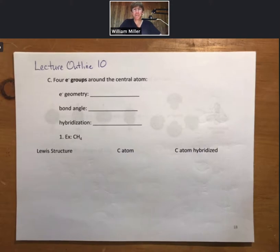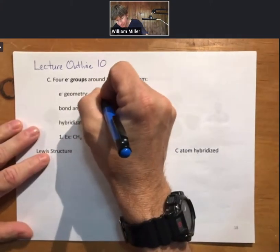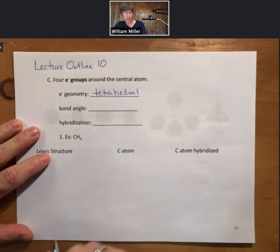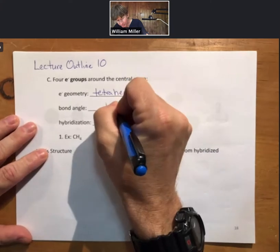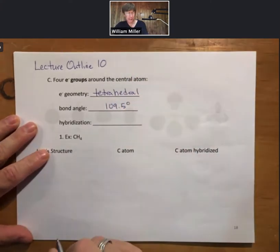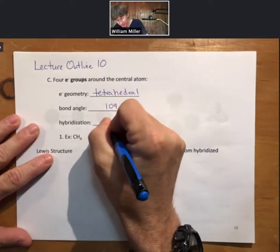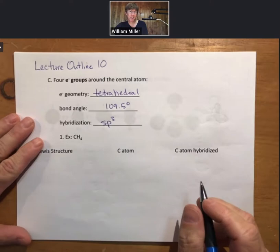Starting with page 18 this time, we just did two and three electron groups. Now we're going to do four electron groups around the central atom. The electron geometry is going to be called tetrahedral. The bond angles will be 109.5 degrees and the hybridization will be sp3 hybridization. The example is going to be CH4, methane.